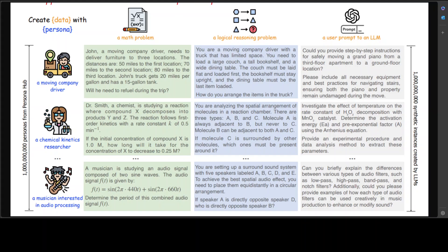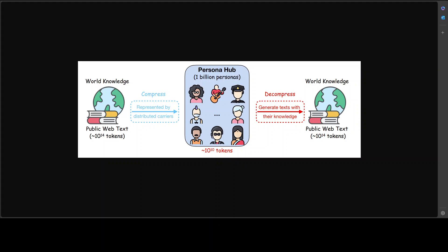For instance, if you look at this diagram, this is showing you from a compression perspective. PersonaHub can be seen as a compressed form of world knowledge, where public web text for training LLMs into distributed carriers has been used. On the other hand, the public web text can be seen as decompressed content created by these personas with knowledge and experience.